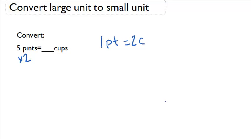So in this case, we're going to multiply by two. Five pints times two cups for each of those five pints is going to be equal to ten cups all together.